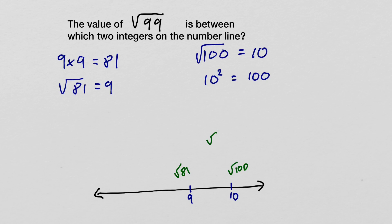Therefore, we know that the square root of 99, the number we're looking for, has to fall somewhere in between 9 and 10.